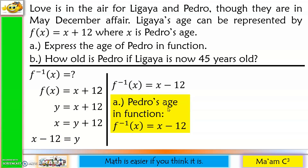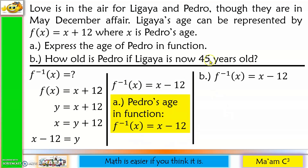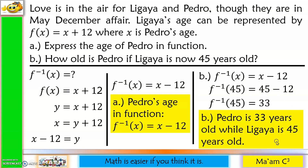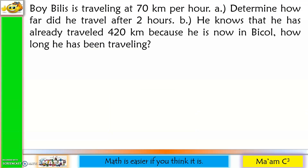This is the function for Pedro's age. Now, letter B: how old is Pedro if Ligaya is now 45 years old? Since we already have the function for the age of Pedro, we can simply substitute 45 for x to determine Pedro's age. 45 minus 12 is 33. Therefore, Pedro is 33 years old while Ligaya is 45 years old.